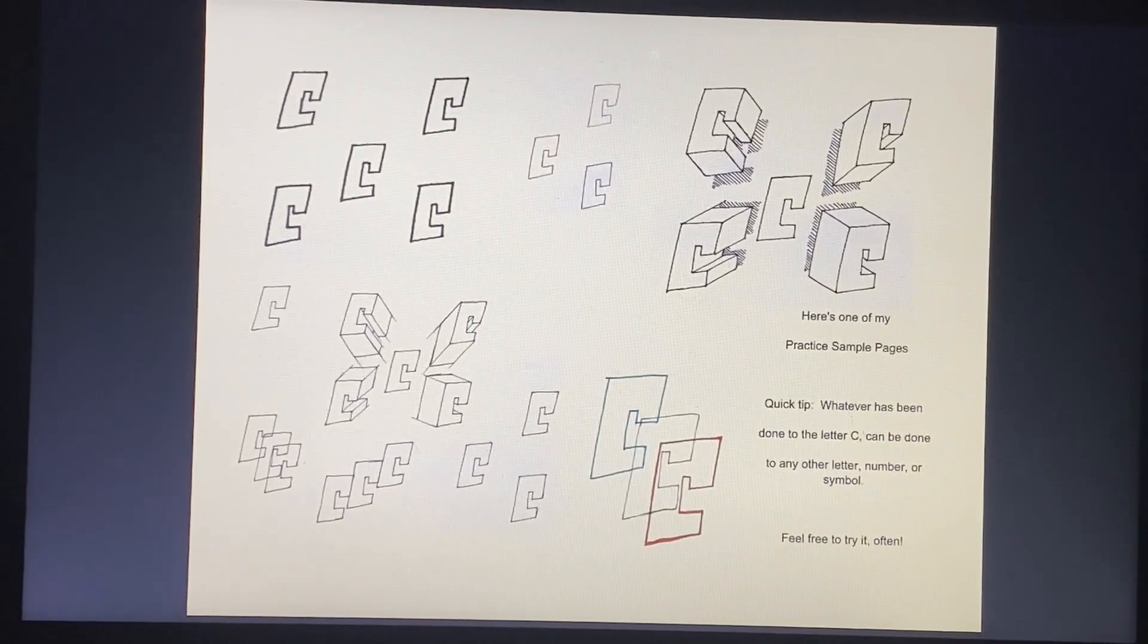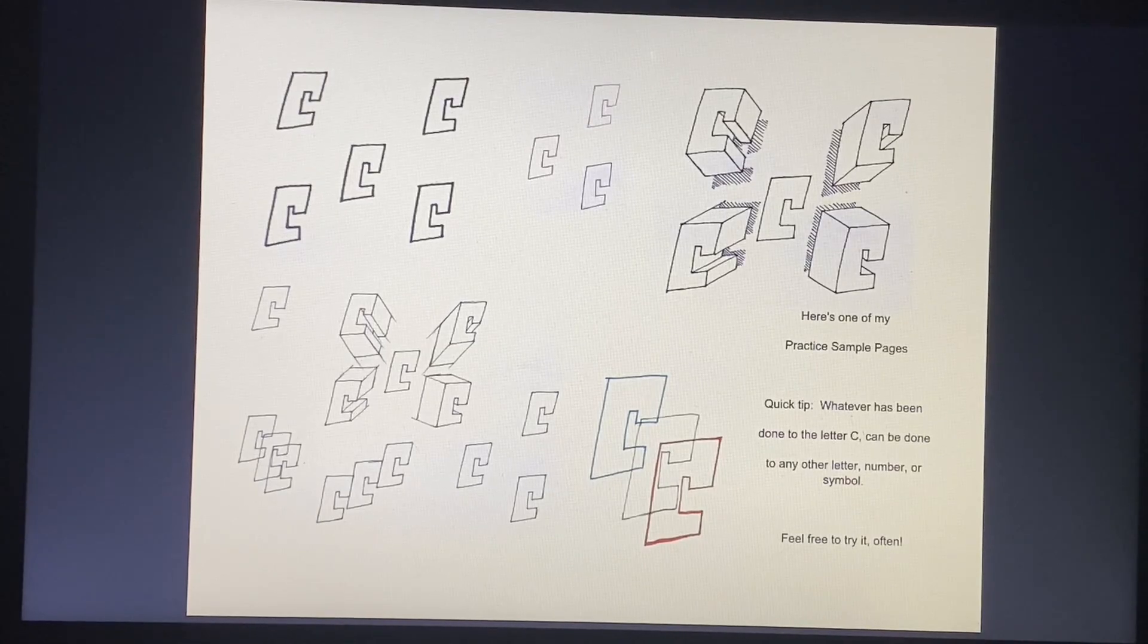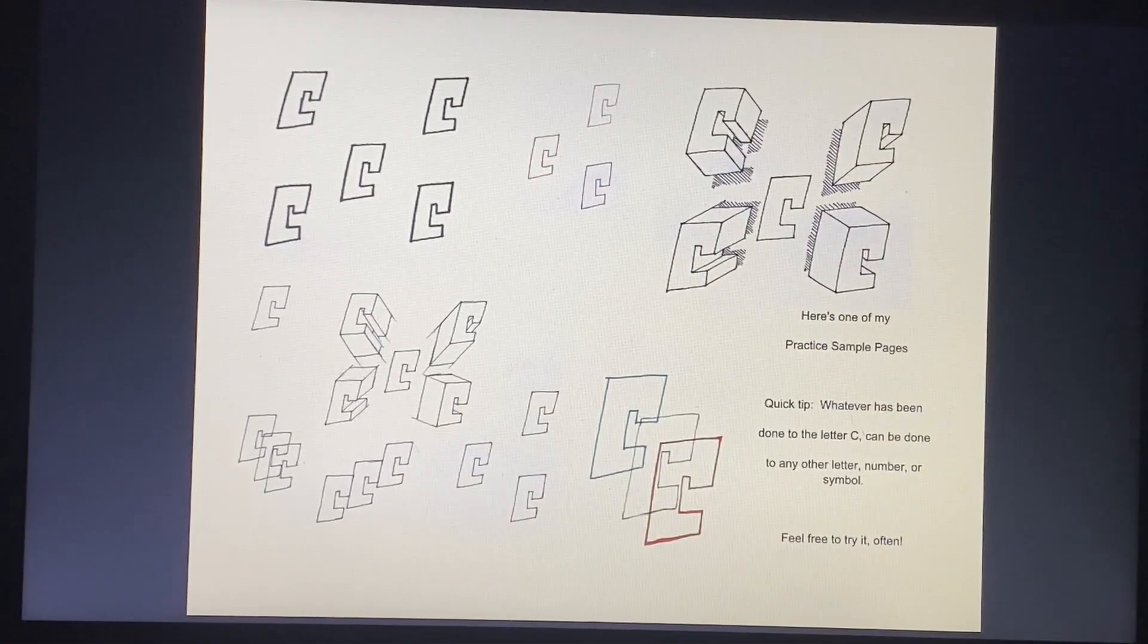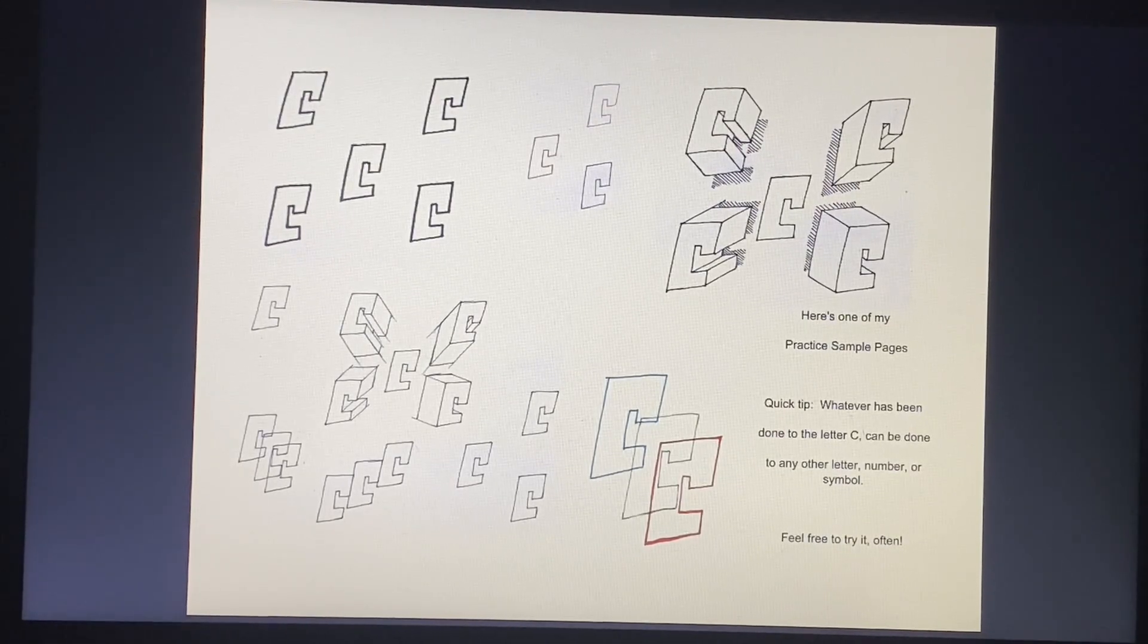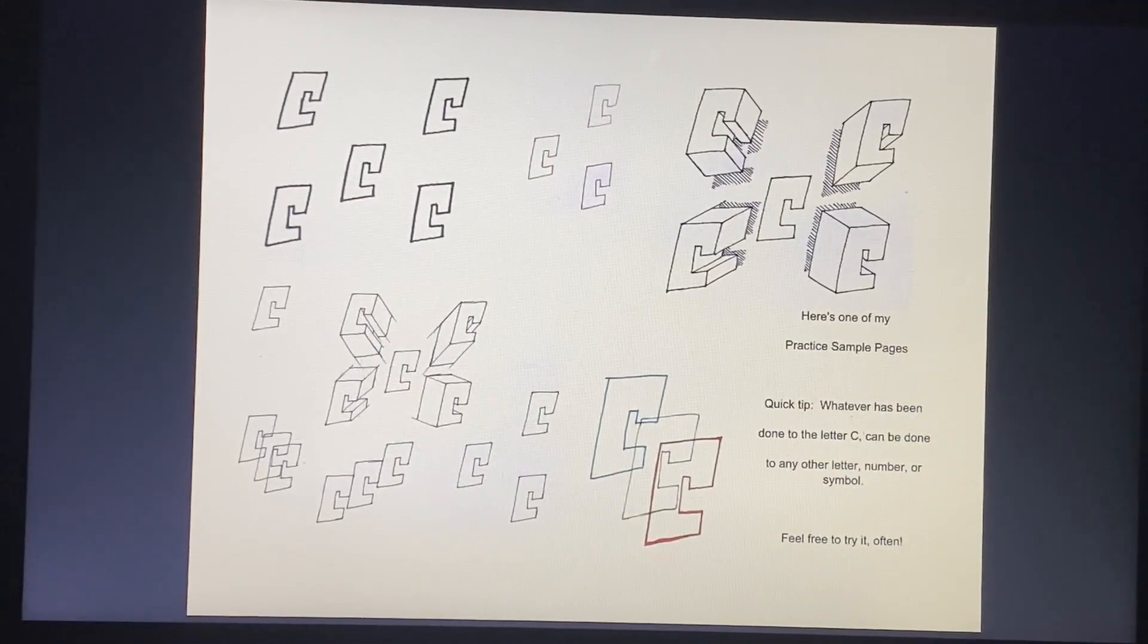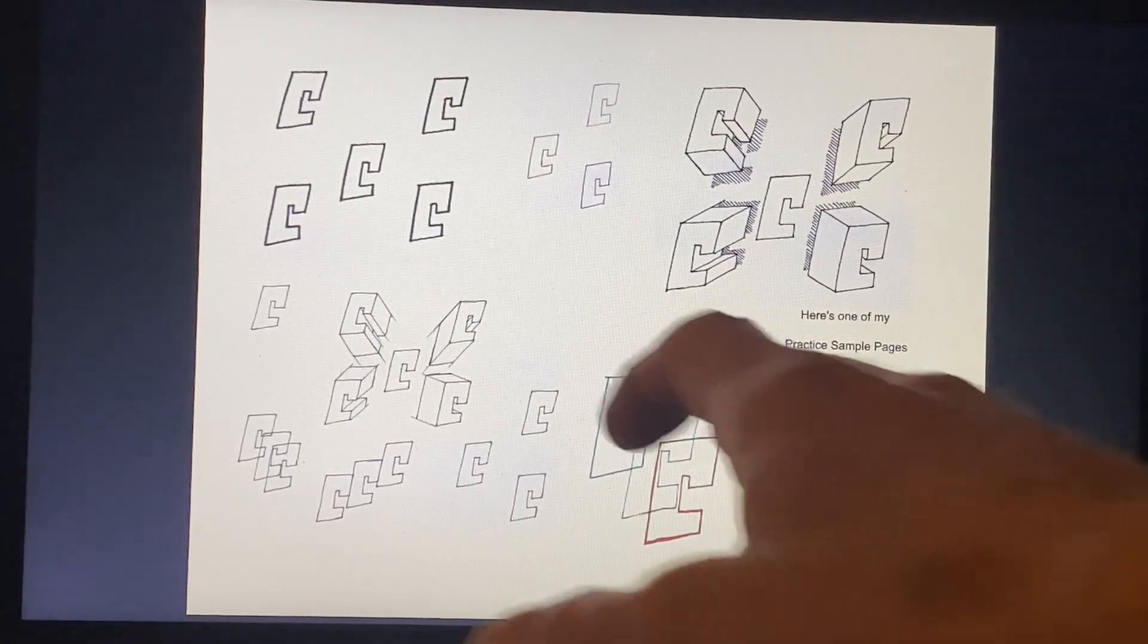Here's one of my practice sample pages. A quick tip: whatever has been done to this letter C can be done to any letter, any number, any symbol. Feel free to try it often. I like to use more than one image on a piece of paper so that I don't waste paper, and this way I can practice a lot.